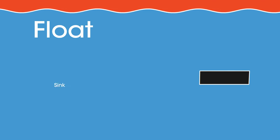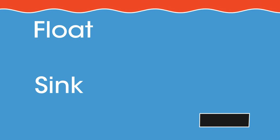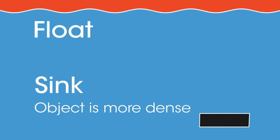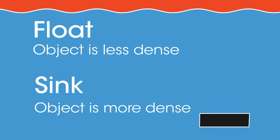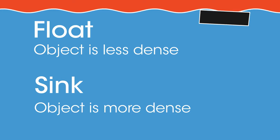We can use density to predict whether an object will float or sink when it's placed in a liquid. If the object is more dense than the liquid it will sink. If the object is less dense than the liquid it will float.